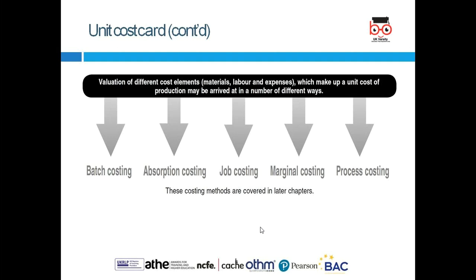Material, labor, and expenses make up the unit cost. Production costs may be arrived at through different methods — batch costing, absorption costing, job costing, marginal costing, and process costing. These costing methods will be covered in later lessons.